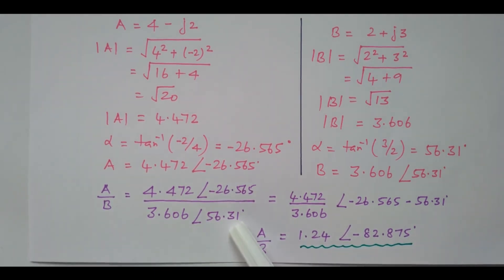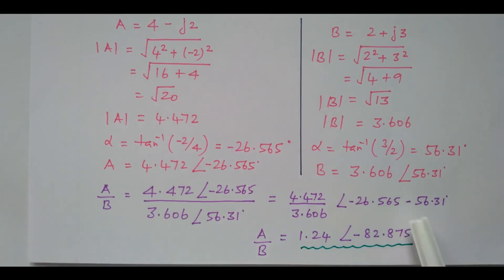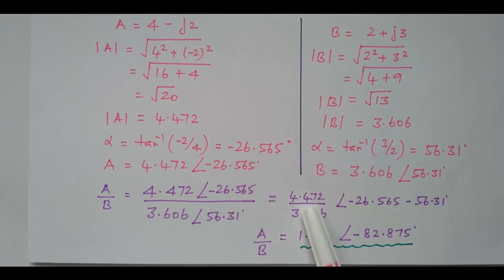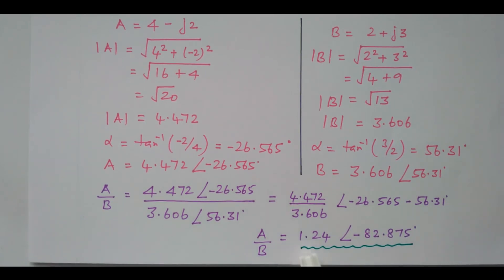So this angle, while going into the numerator, becomes minus. So both are minus, and it becomes minus 82.875 degrees. The division of the magnitudes is 1.24. So this is the final value of A divided by B. For multiplication, the magnitudes are multiplied and the angles are added together. For division, the magnitudes are divided and angles are subtracted.